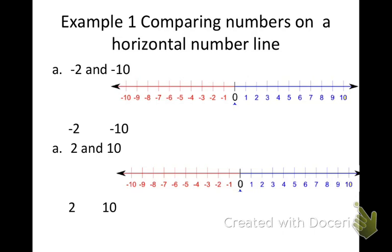You're going to copy down Example 1: comparing numbers on a horizontal number line. We're going to compare two numbers. I would recommend pausing the video and copying all this down, leaving space that you can write in between. Make sure you leave plenty of space and write large enough so that I can see it tomorrow when I check your notes. We want to compare negative two and negative ten.